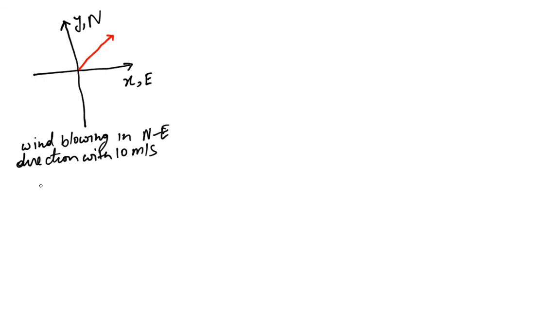Now, let's say we want to draw a wind which is blowing in the northeast direction with 20 meters per second. Then, how would we draw this arrow? Well, something like this.